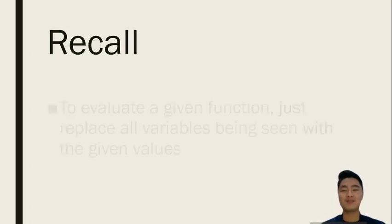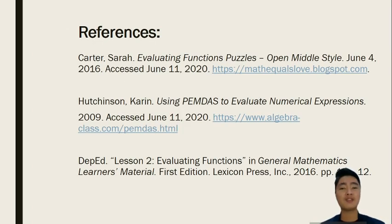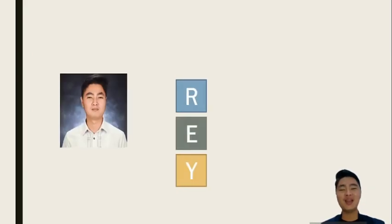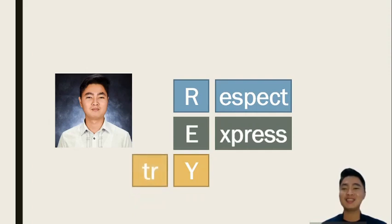Let's try to recap. How do you evaluate a function? To evaluate a given function, just replace all the variables being seen with a given value or values. Have you learned something today? If you wanted to read more about evaluating functions, check out these references. I hope you learned something today. This is Teacher A reminding you to respect, express, and try. See you next time! Bye-bye!